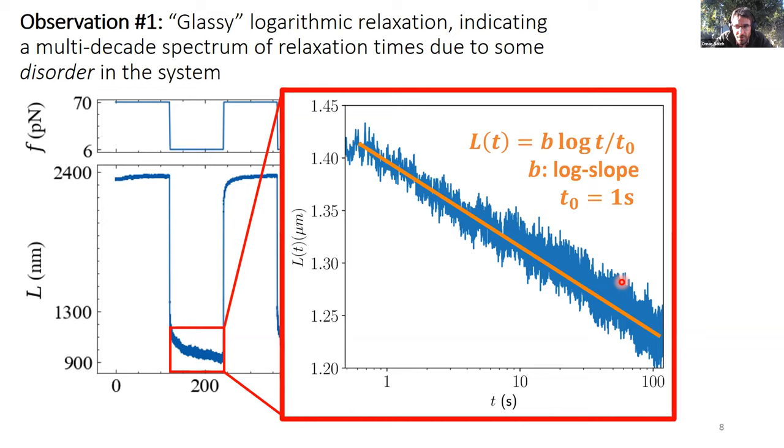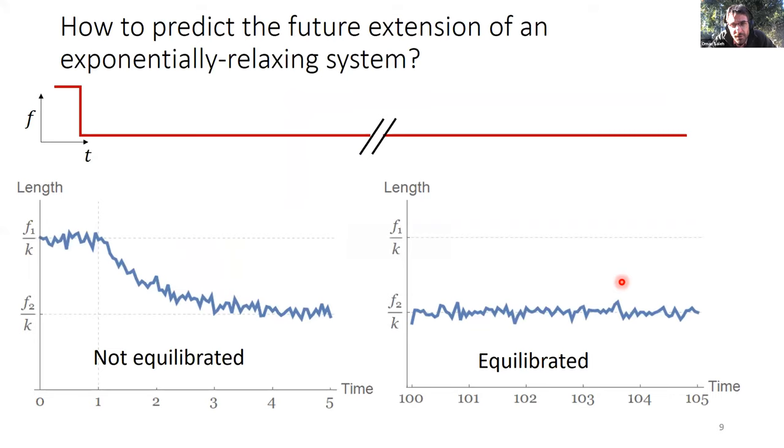The second question I want to focus on for this talk is a question of predicting the future. So now I want to go back and pretend we're thinking again about our helix coil system and say we do the force jump, and we measure the trajectory both at short times and then at long times. And at long times, of course, it's equilibrated. And if I ask, can I predict the future extension of the equilibrated system, the answer is trivially yes. Once I measure it, I know it's going to stay close to that extension over a very long time. Technically, I can predict it if I know the force and the internal parameter, which is the elastic response of the system.